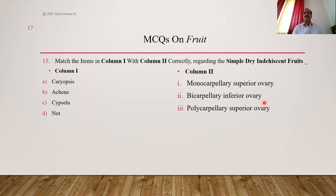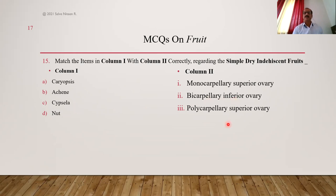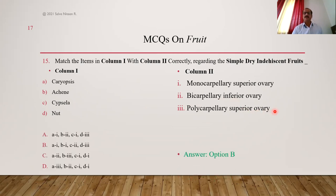Matching achenial fruits with their ovary types: caryopsis and achene develop from monocarpellary superior ovary; cypsela develops from bicarpellary inferior ovary and is a false fruit; nut develops from polycarpellary syncarpous superior ovary. Option B is the correct matching.